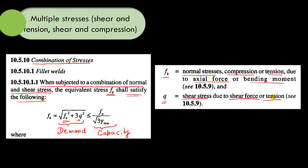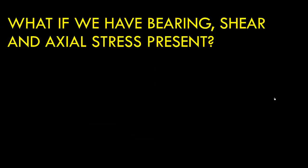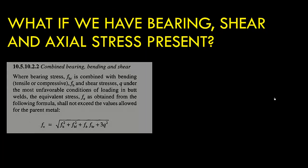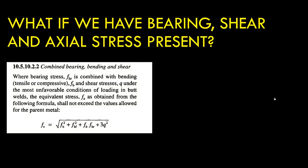Now the question is how we calculate the equivalent stress when we have bearing, shear, as well as axial stresses all present in the weld. Clause 10.5.10.2.2 addresses this. It states that when bearing stresses F_VR are in combination with bending due to either tensile or compressive forces F_V, and shear stresses Q, under the most unfavorable loading condition in the butt weld, the equivalent stress F_E is obtained from the following formula and should not exceed the value allowed for the parent metal.